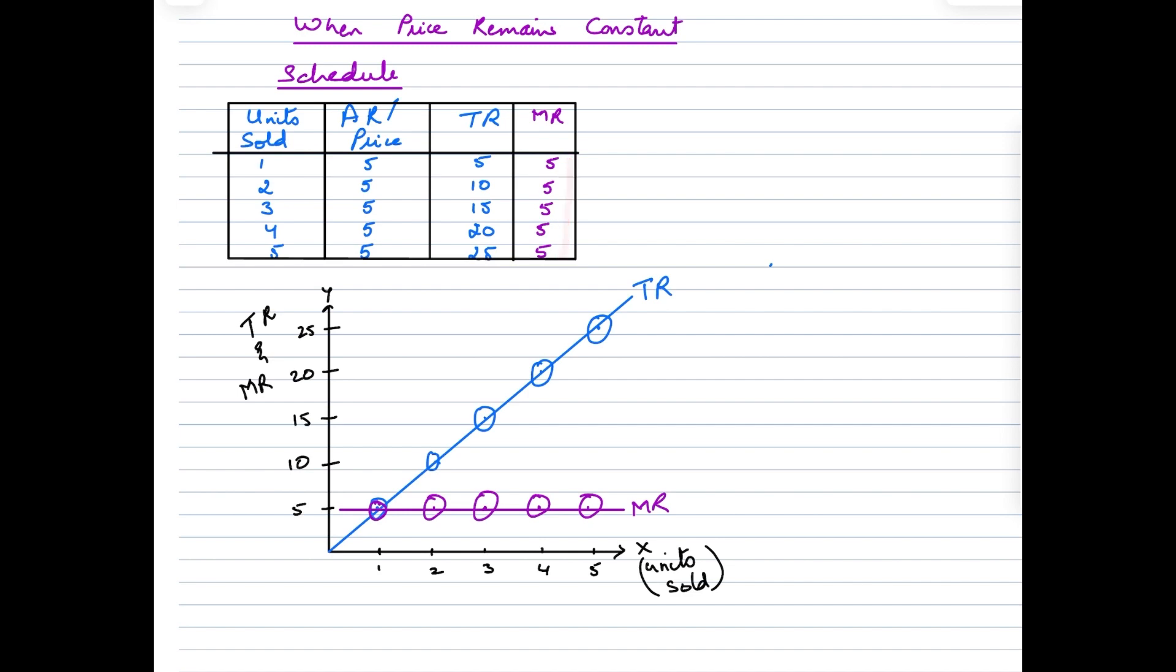Now when we plot these two concepts on the graph, this is how the graph would look like. In this diagram we have Total Revenue and Marginal Revenue on the Y-axis and units sold on the X-axis. When we look at Marginal Revenue, it is constant at 5, so the Marginal Revenue curve is a parallel line to the X-axis.